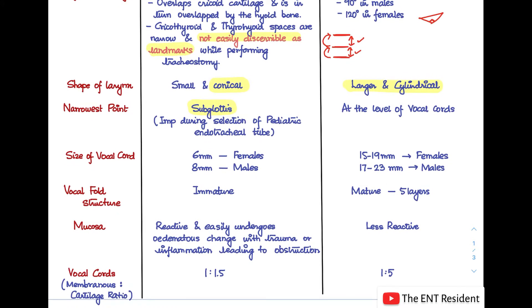Regarding vocal cord size: in infants it is about 6 mm in females and 8 mm in males, whereas in adults it is 15 to 19 mm in females and 17 to 23 mm in males.